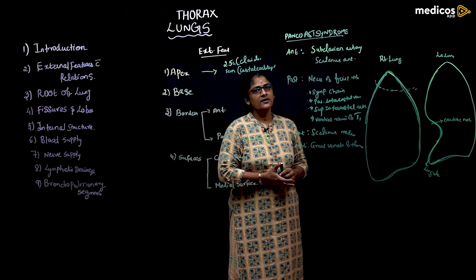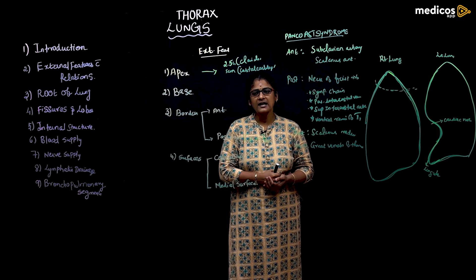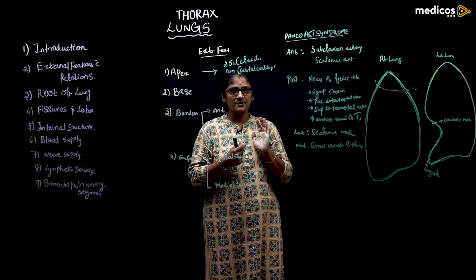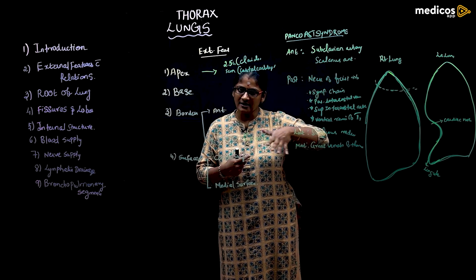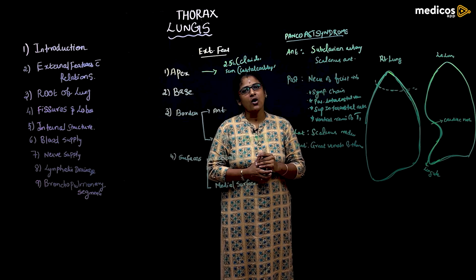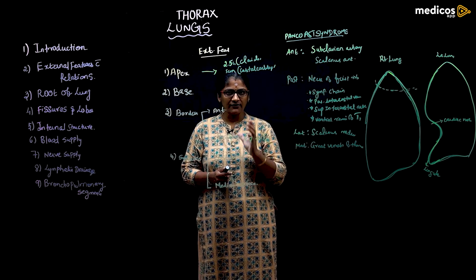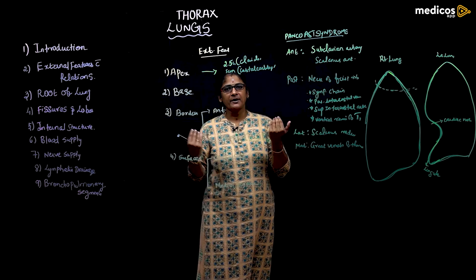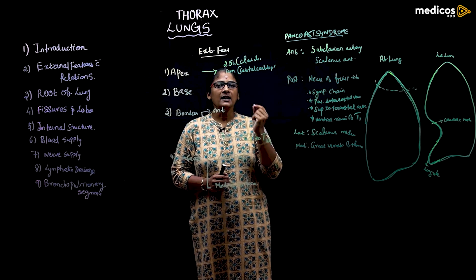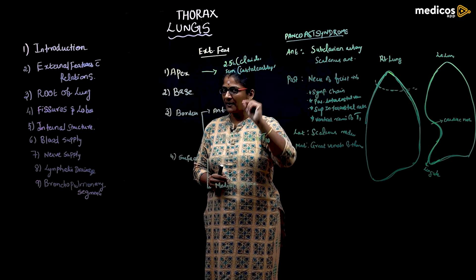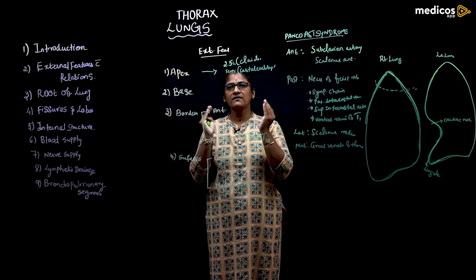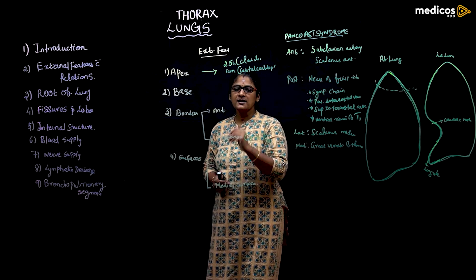The costal surface is rounded, convex, and laterally situated. It is related to the thoracic wall and separated from the thoracic wall by a fascia called the endothoracic fascia. So the costal surface is related to the thoracic wall via the endothoracic fascia, while the apex has the suprapleural membrane above the pleura.